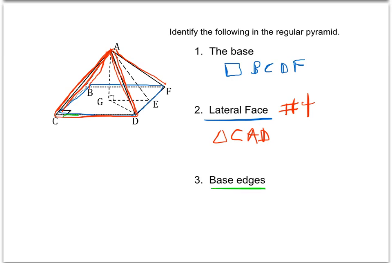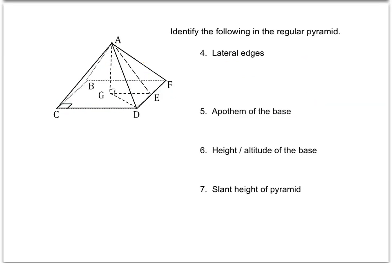For the base edges, we said the base was a square, so a square has four edges and we would name each of those. The order doesn't matter — we have four segments representing the base edges. For lateral edges, those are the edges that create the lateral faces. Because there are four sides on the base, there are four lateral edges: AF, AD, AC, and AB. You'll notice each includes A because each of those edges comes up to a point there.